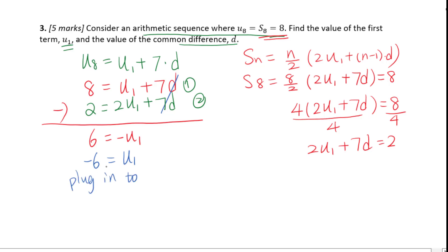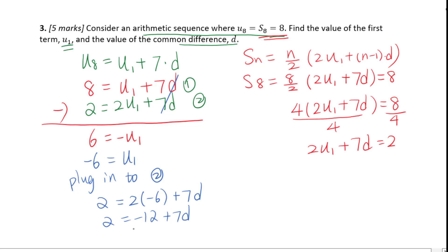We plug into the second equation. We get 2 equals 2 times negative 6 plus 7d, so 2 equals negative 12 plus 7d. Then 14 equals 7d; dividing both sides by 7, d equals 2. Therefore, d equals 2 and U1 equals negative 6.